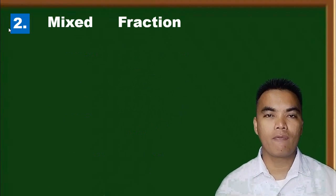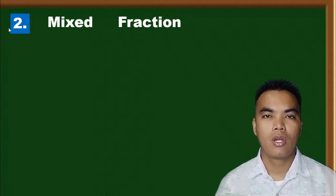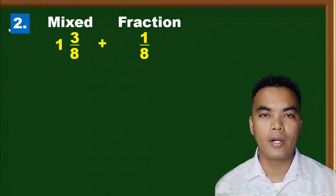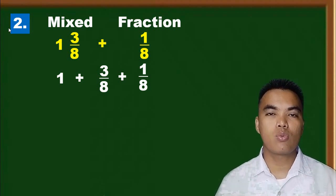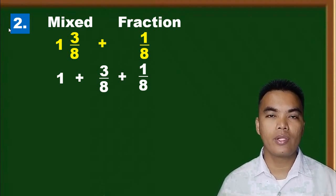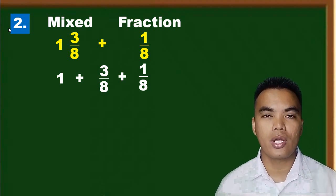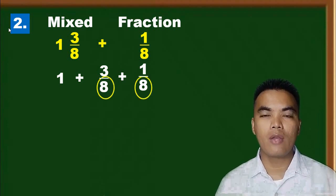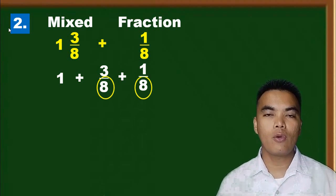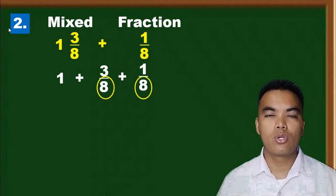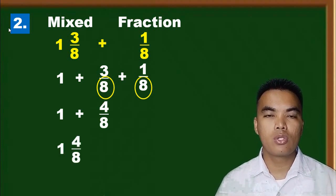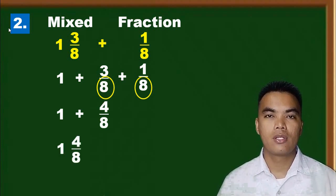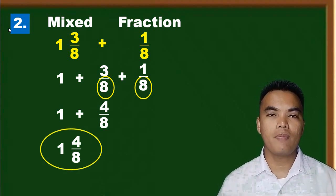Now, how do we add a mixed number with a fraction? For example, one and three over eight plus one over eight. That equals one plus three over eight plus one over eight. We copy the one and add the fractions. Since three over eight and one over eight are similar fractions, three over eight plus one over eight equals four over eight, giving us one and four over eight.